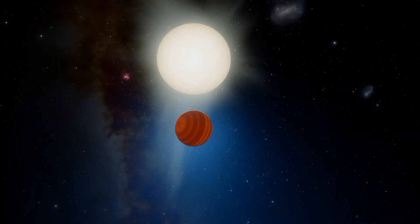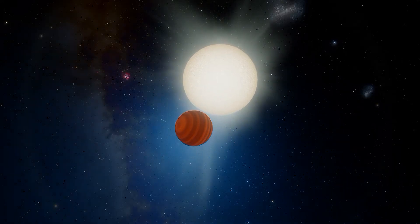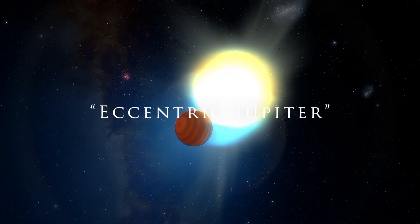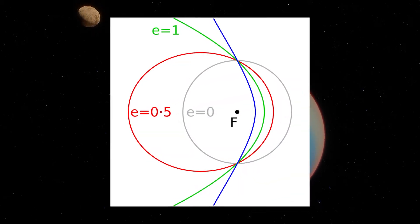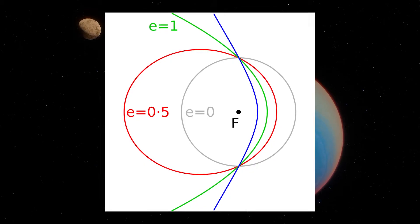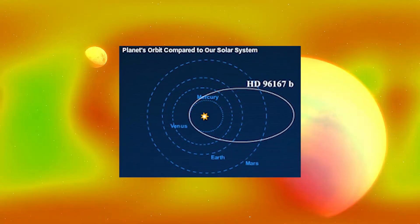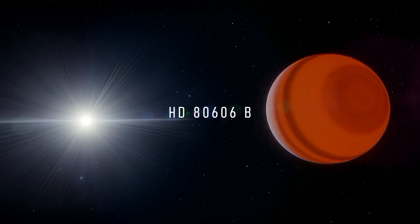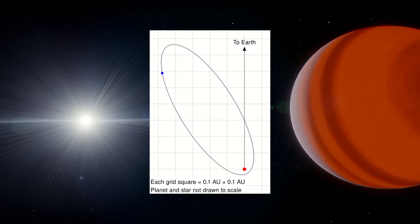But, hot Jupiters weren't all we found around other stars. One particularly strange gas giant type is an eccentric Jupiter. In astronomy, eccentricity refers to how much an orbit deviates from a perfect circle. Thus, an eccentric Jupiter is a gas giant that orbits in a highly elliptical orbit around its star. The planet HD 80606b is a good example, having a near comet-like eccentricity.